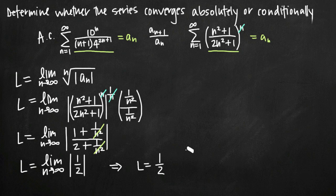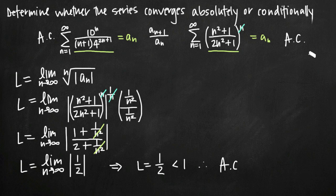Similarly to the ratio test, the root test concludes: if l is less than 1, the series converges absolutely; if l equals 1, the test is inconclusive; if l is greater than 1, the series diverges. Since l equals 1/2, which is less than 1, by the root test this series is absolutely convergent.